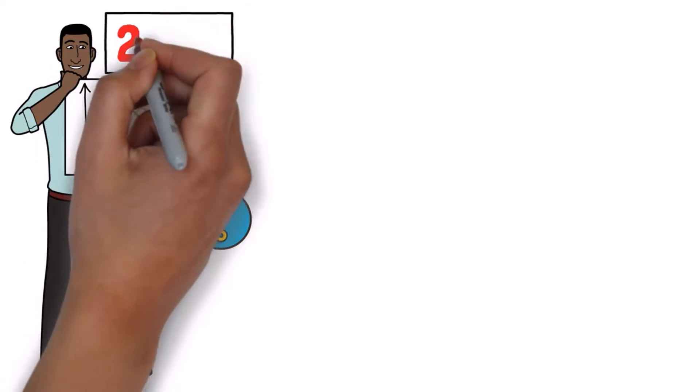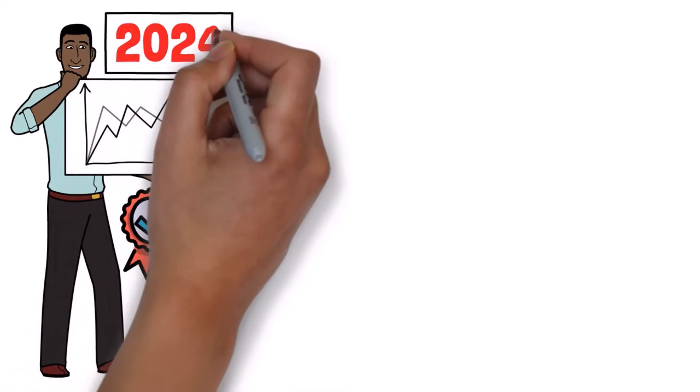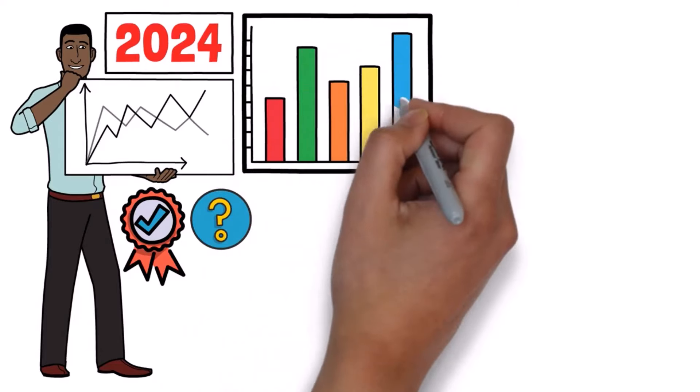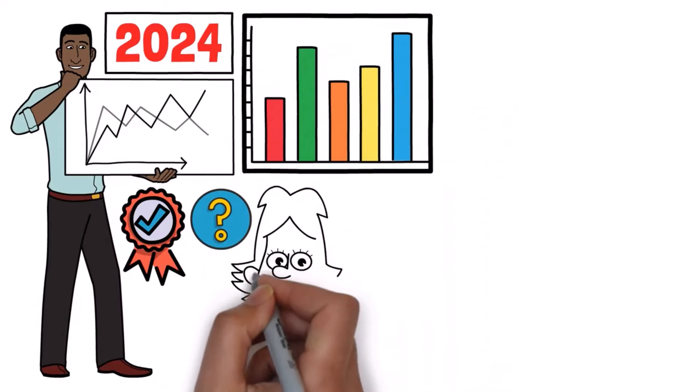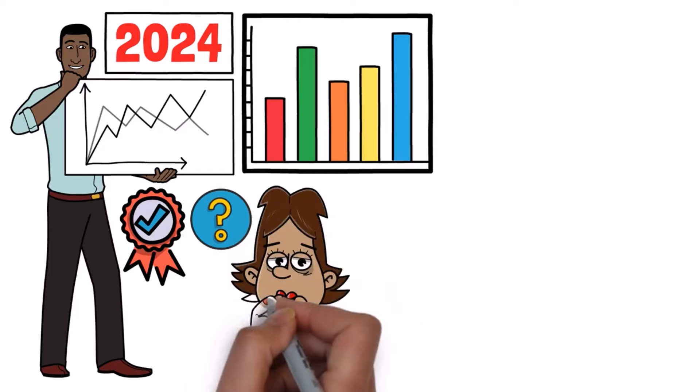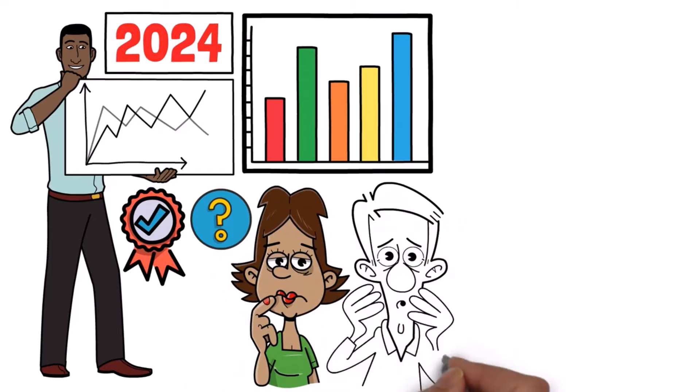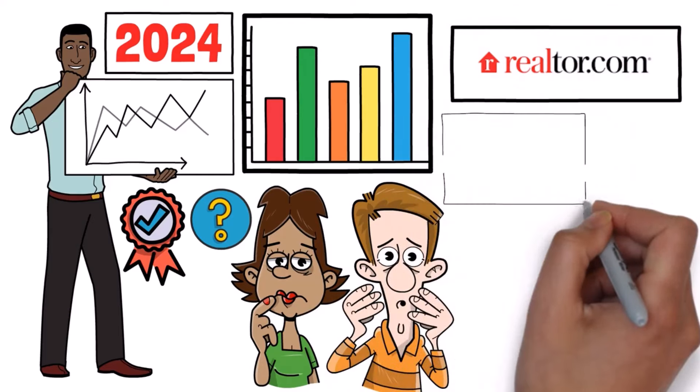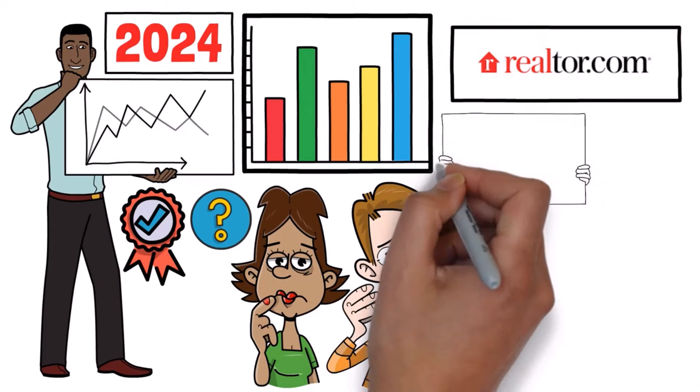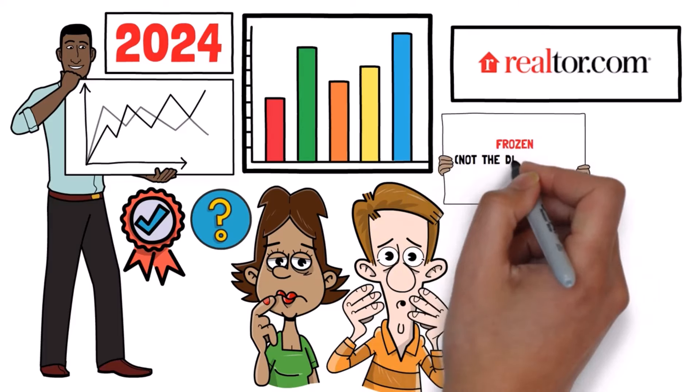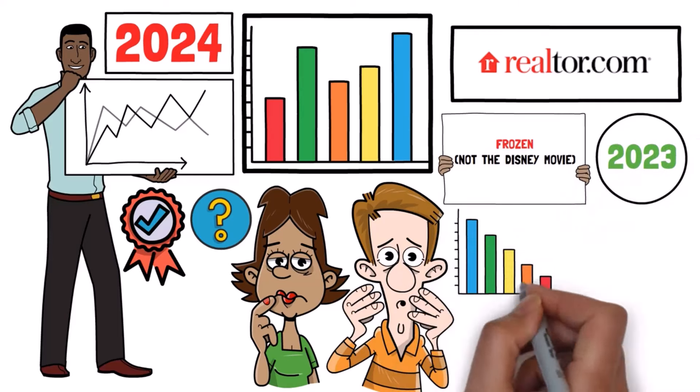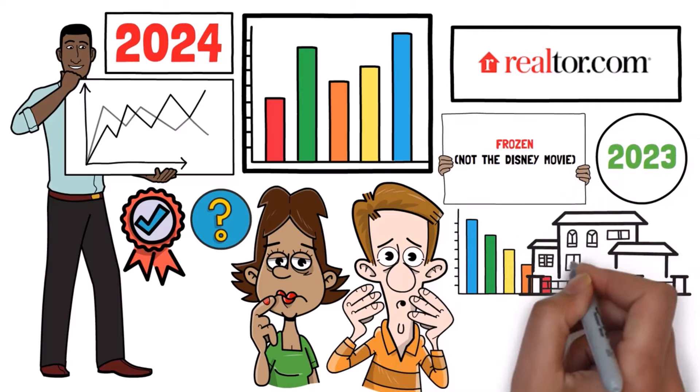Before we talk about the potential pitfalls to watch out for in 2024, we first have to talk about the current status of the housing market, because this is going to lay the foundation for what we're about to see. And as of today, it's pretty shocking. According to Realtor.com year-end review, the entire housing market was perfectly summed up in one word – Frozen, not the Disney movie – with the entire belief that 2023 will go down in history as one in which the housing market came to a complete standstill.